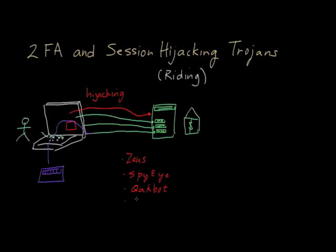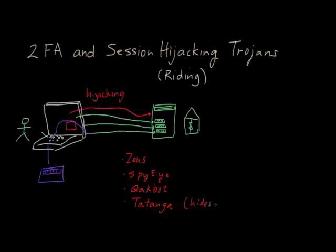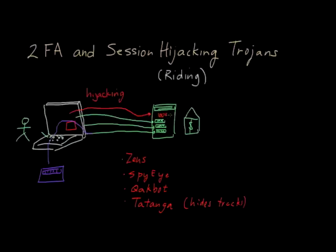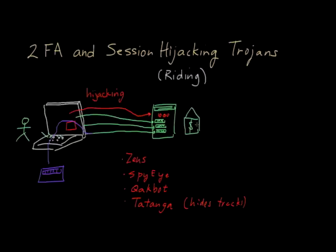Finally, there's a particularly nefarious session hijacking trojan known as Tatanga. What Tatanga does is it not only circumvents two-factor authentication, but it also hides its own tracks — it literally tries to make itself invisible even from the user's perspective. Once Tatanga transfers any funds, it actually dynamically rewrites the account balance page to present the original balance back to the end user. So if you had a balance of $1,000 and Tatanga withdraws all $1,000, your real balance is zero, but Tatanga rewrites it back to $1,000 — so the user still sees $1,000 even though their bank balance is zero.